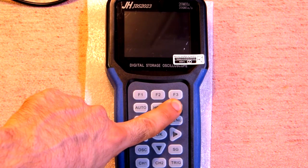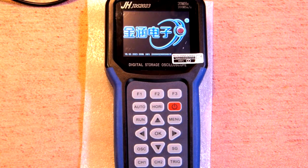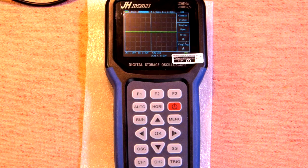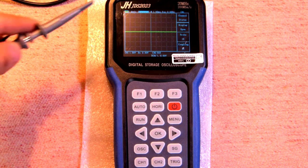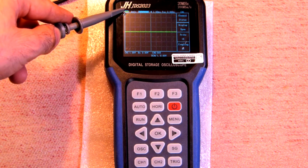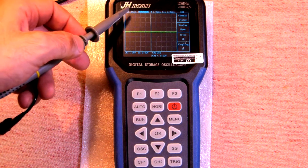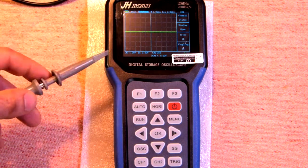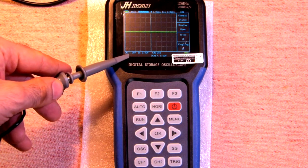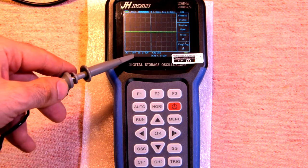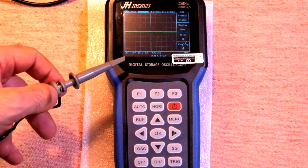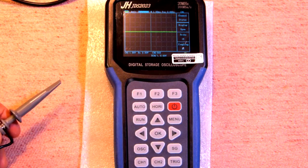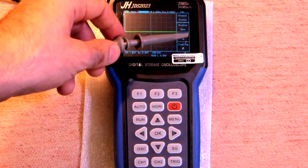Let's turn on this device. Long press and in some seconds it turns on. Here we have battery level indicator, mode auto, time base, here we have one volt per division, DC offset, channel 2 is off and here we have functions.